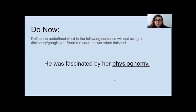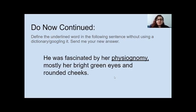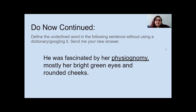But let's take a look at this sentence — we're going to try that again. Define the underlined word physiognomy without using a dictionary or Googling it, and send me your new answer. The new sentence is: 'He was fascinated by her physiognomy, mostly her bright green eyes and rounded cheeks.'